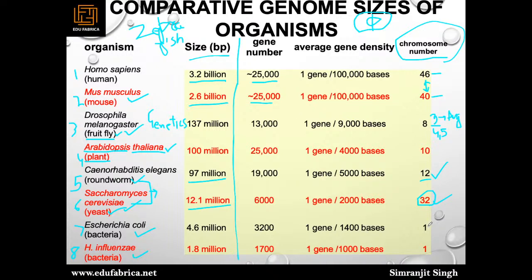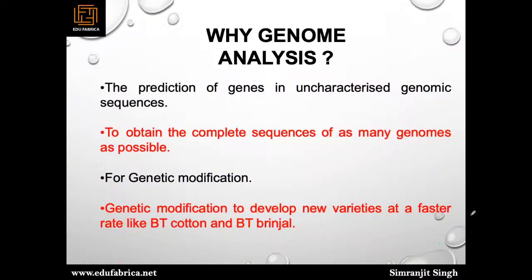In bacteria, the chromosome number is just one, making them prokaryotes. Their base pair count is much lower — around 1.8 to 4.6 million — making genomic comparison with Homo sapiens challenging, though they are the best model for prokaryote studies. Genome analysis is required for predicting genes in uncharacterized genomic sequences, obtaining sequences of many genomes, enabling genetic modification, and developing new crop varieties at faster rates — such as Bt cotton and other transgenic crops.